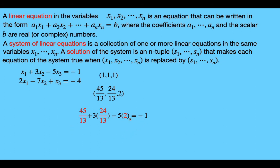If you add those all up, you would see that it equals negative 1, so the first equation is satisfied. For the second equation, we get 2 times 45/13 minus 7 times 24/13 plus 2, and that also equals negative 4, so the second equation is true as well. So this is in fact a solution to our system.